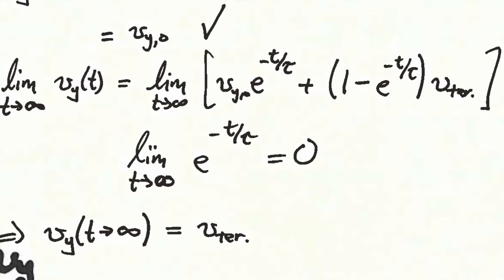More interesting behavior occurs as t goes to infinity. As t goes to infinity, e to the minus t over tau goes to 0, so the term proportional to the initial velocity vy0 — which is times e to the minus t over tau — goes to 0. The other term, 1 minus e to the minus t over tau times the terminal velocity, becomes 1 times the terminal velocity. So as t goes to infinity, the y-velocity approaches the terminal velocity. That is why we call it the terminal velocity.